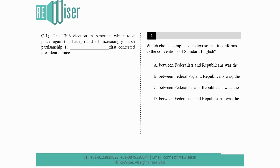The 1796 election in America, which took place against a background of increasingly harsh partisanship, was the first contested presidential race. The question asks which choice completes the text so that it conforms to the conventions of standard English. Option A: between Federalists and Republicans was the. Option B: between Federalists, and Republicans was the. Option C: between Federalists and Republicans was the. Option D: between Federalists and Republicans, was the.